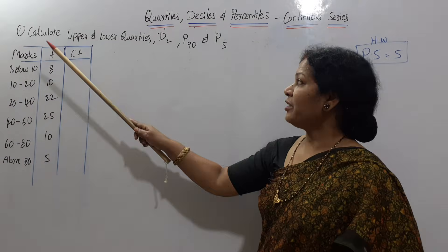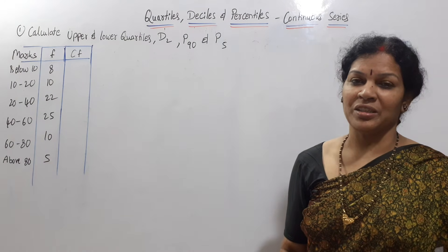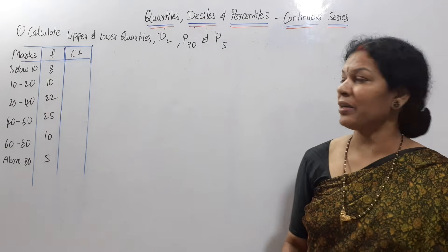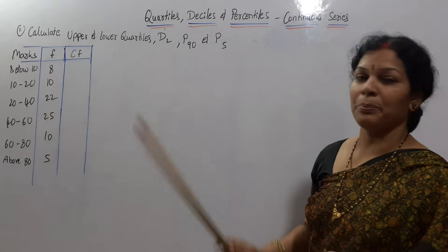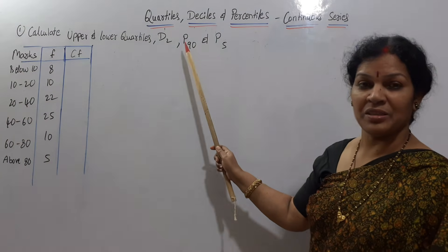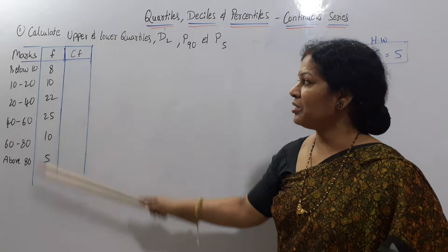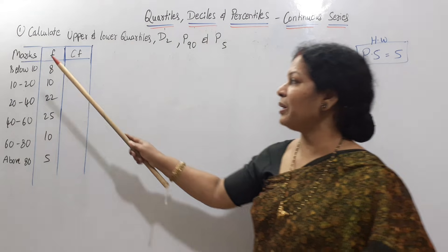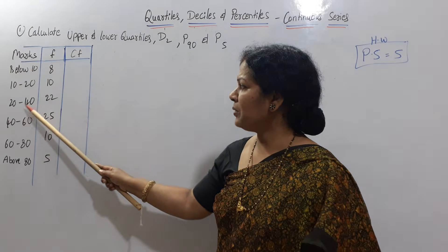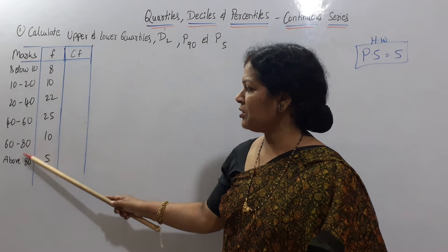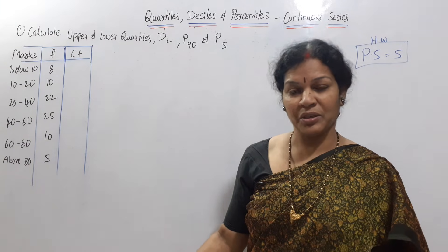Calculate upper and lower quartiles — upper quartile means Q3, lower quartile means Q1 — and also D2, P90, and P5. So decile 2, percentile 90, and percentile 5 we have to calculate in continuous series. The class intervals given are: below 10, 10 to 20, 20 to 40, 40 to 60, 60 to 80, and above 80. The class intervals are not in equal order but you can keep it as it is.